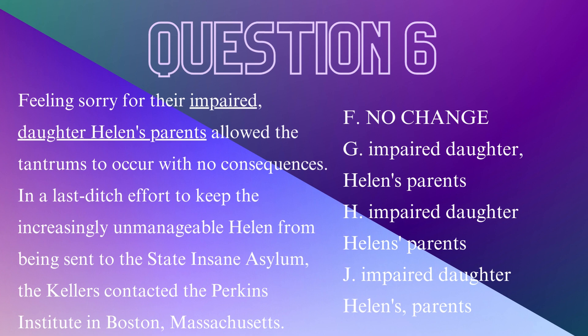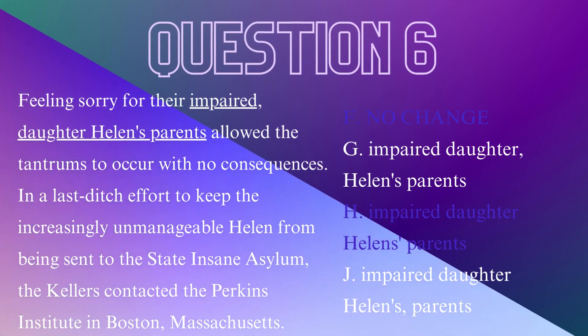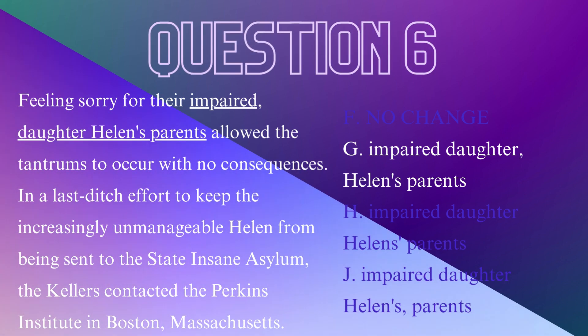Question 6. Look closely at the use of commas and apostrophes. Use process of elimination — rule out an answer choice if you see an error. F, no change: there shouldn't be a comma between the adjective 'impaired' and the noun 'daughter.' H: the apostrophe shouldn't appear after the S, but before the S in 'Helen's' to show possession. J: you wouldn't put a comma after 'Helen's' and before 'parents.' G is correctly written: 'Feeling sorry for their impaired daughter, Helen's parents allow the tantrums to occur with no consequences.'